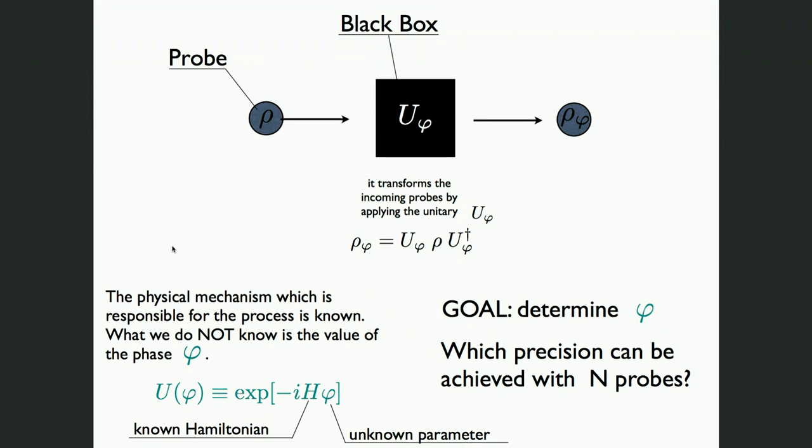I want to discuss one final topic related to parameter estimation: the difference between shot noise and Heisenberg scaling, with entanglement as a resource. Consider a probe passing through a black box described by a unitary U(phi) = exp(-i H phi), where phi is the parameter to be determined. This is equivalent to a phase shift estimation problem, common in quantum optics — for example determining the phase delay of a signal in an interferometer.